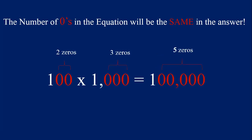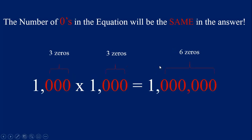Let's try 100 times 1,000. First, multiply your ones — the numbers that are not zero: 1 times 1 equals 1. Count your zeros: 1, 2, 3, 4, 5 zeros are in the equation. So we write five zeros in the answer. Count over three place values, put in that comma, and this number is 100,000. 100 times 1,000 equals 100,000.